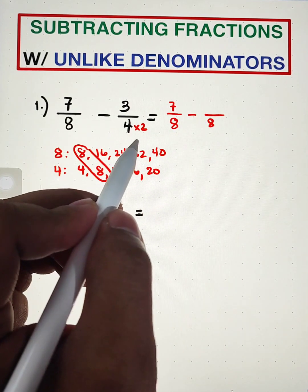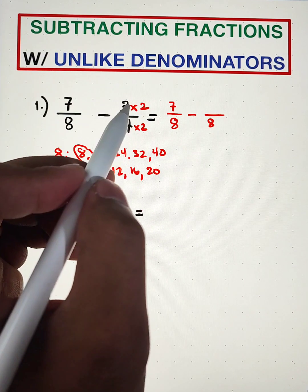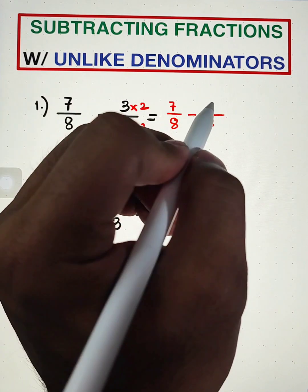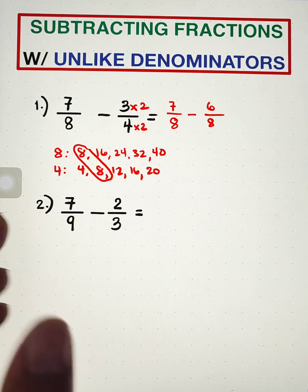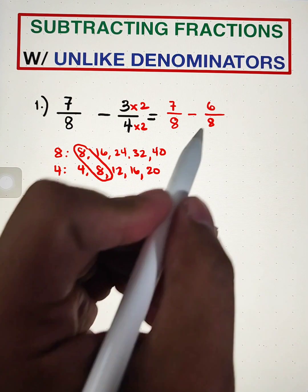Since we multiplied 2 to our denominator, we also need to multiply our numerator by 2. And 3 times 2 is 6. And as you can see, we have a common denominator.